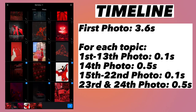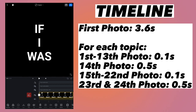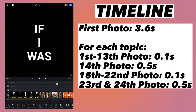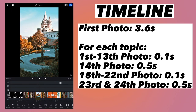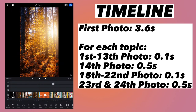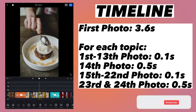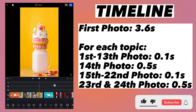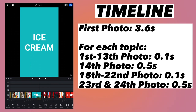Let's quickly preview the timeline. The first photo is 3.6 seconds, then the rest of the photos are 0.1 seconds, the 14th photo is 0.5 seconds, again 0.1 seconds, and the last two are 0.5 seconds. The same pattern has been followed for each topic: 14th photo is 0.5 seconds, the last two are again 0.5 seconds, and the rest are 0.1 seconds. You can find all this info in the description too.